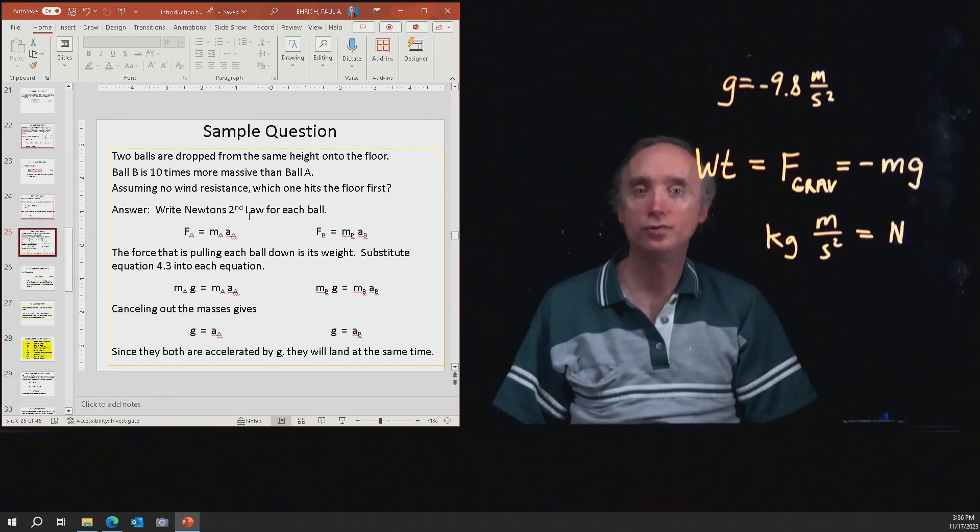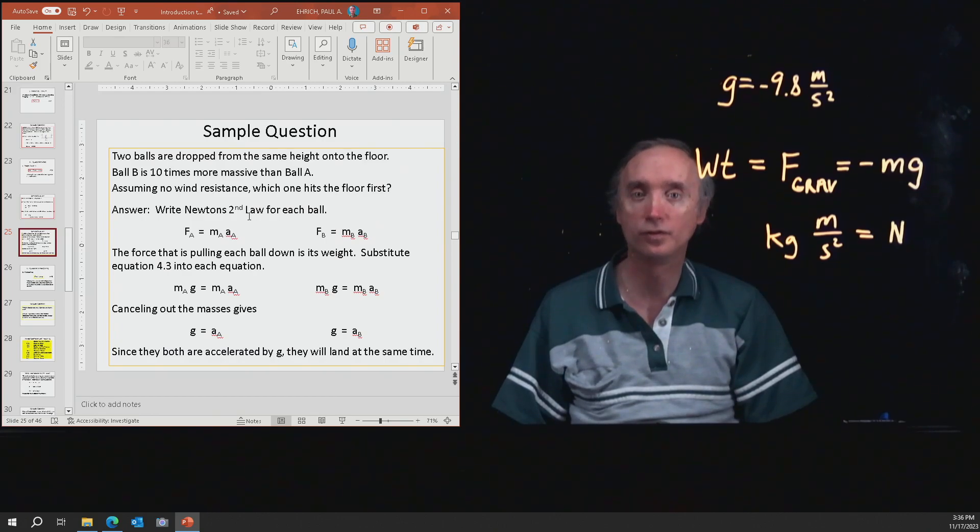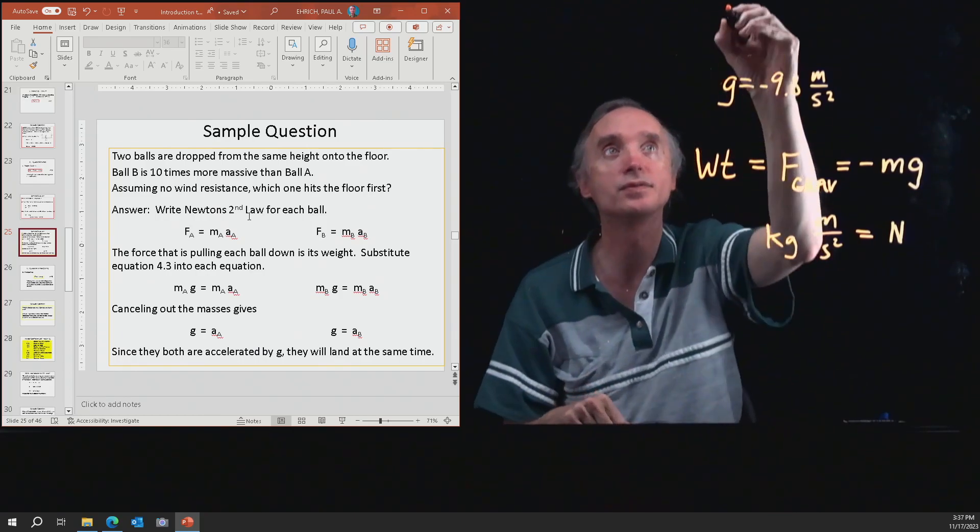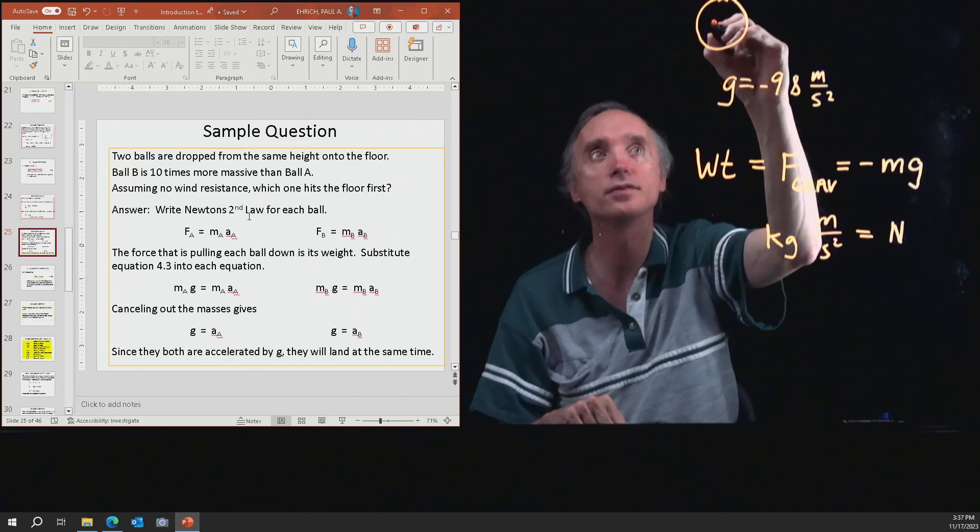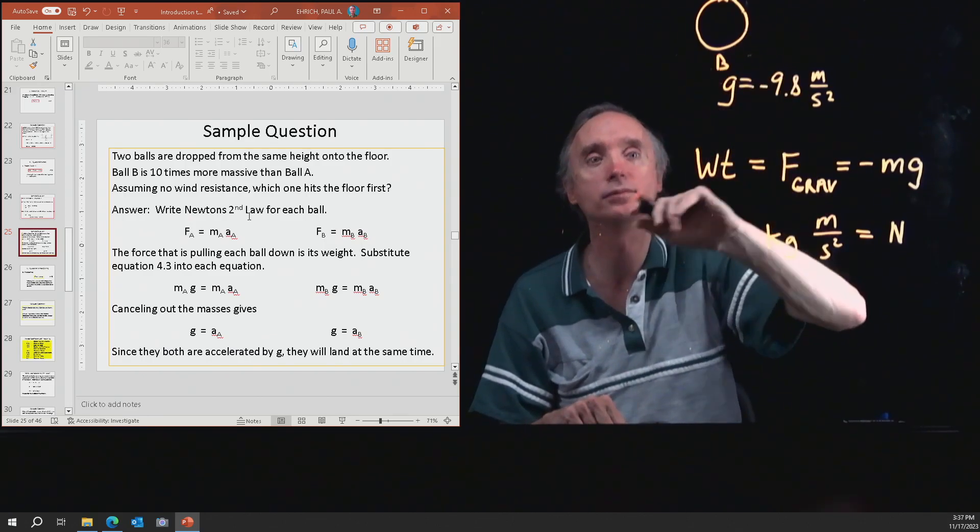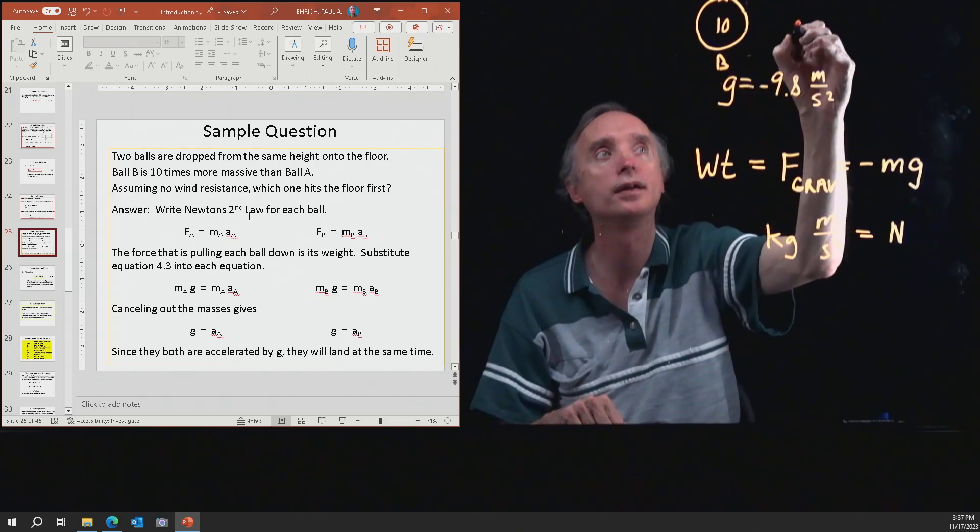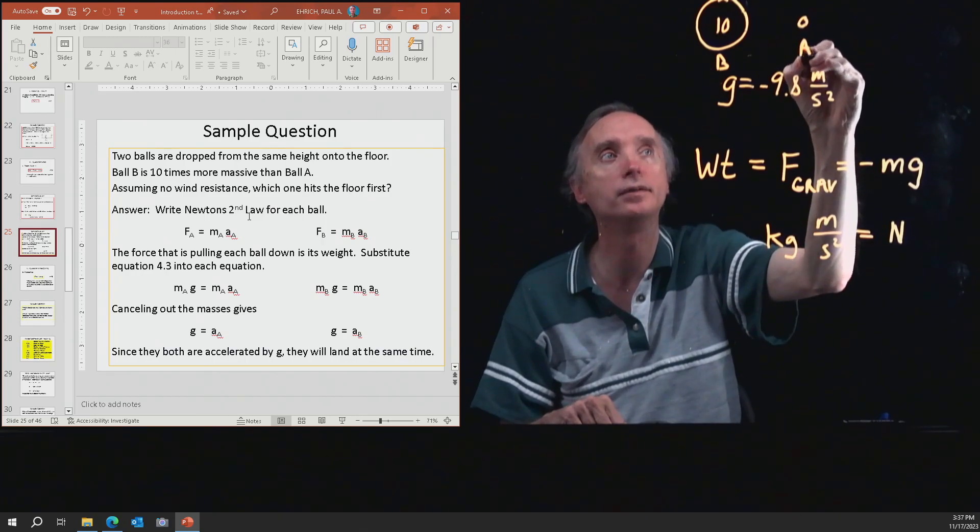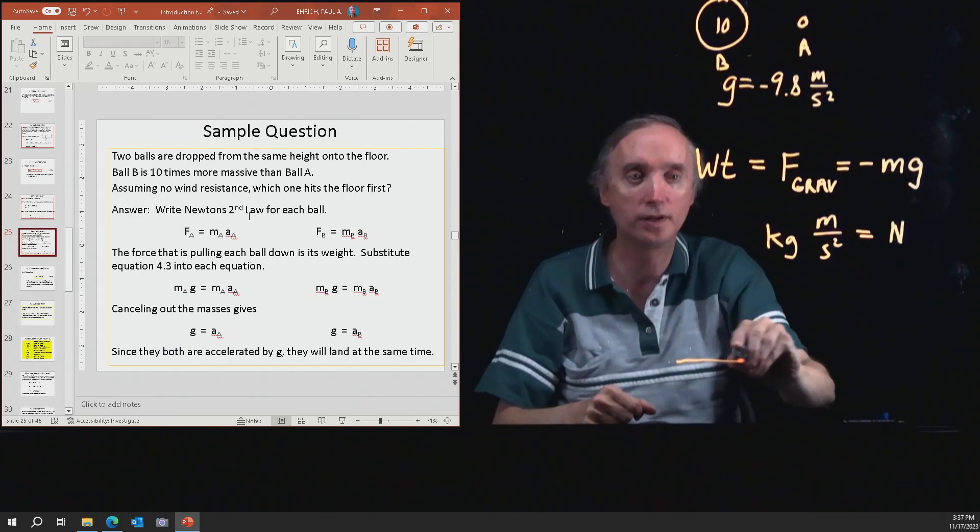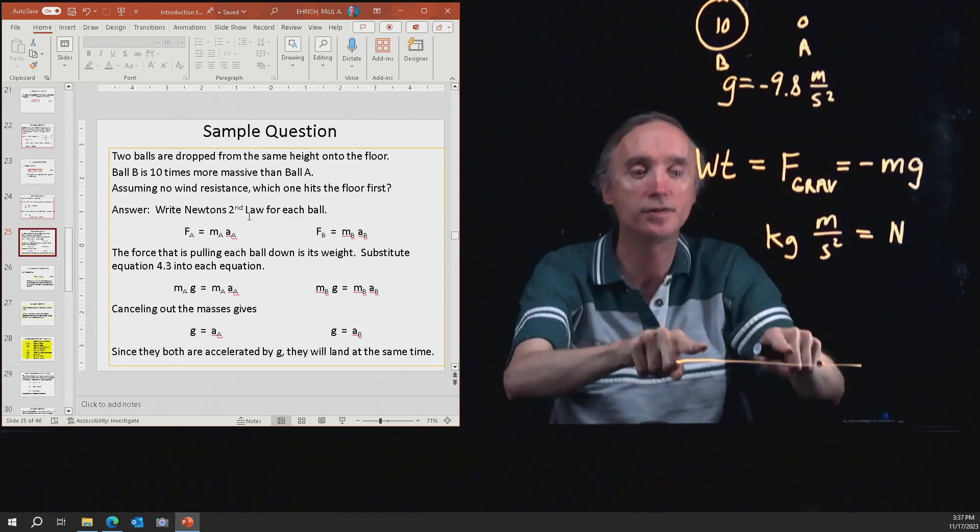Here's another example. You have two balls that are dropped from the same height onto the floor. Ball B is 10 times more massive than ball A. Assuming no wind resistance, which ball is going to hit the ground first? So let's visualize this. It says that ball B is 10 times bigger, so let's have a big ball. And this one is ball B, and it's 10 times bigger. And let's put over here, this one is going to be ball A, it's a little one. They're both going to be dropped at the same time from the same height, and they're both going to hit the ground. So the question is, which one hits the ground first?